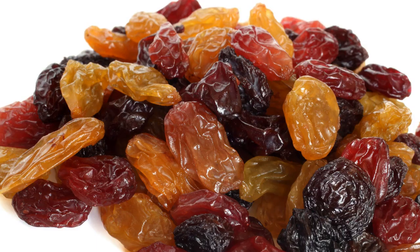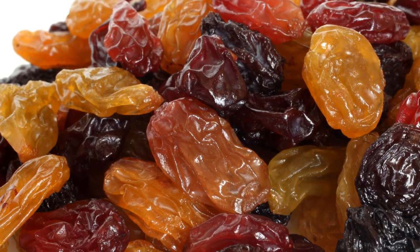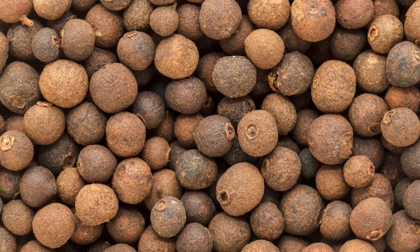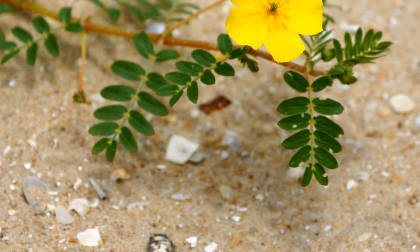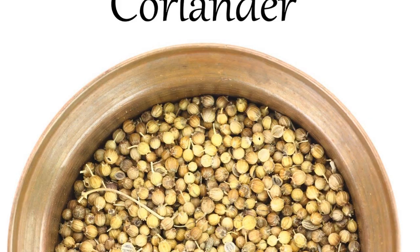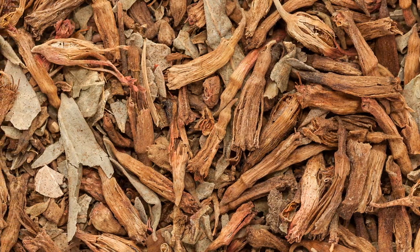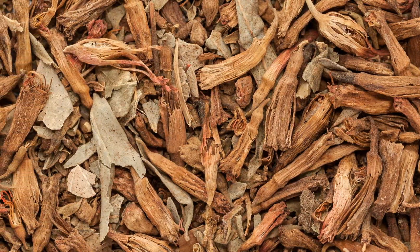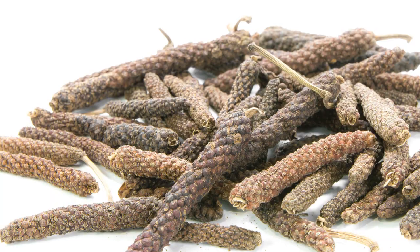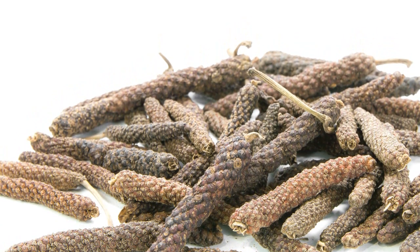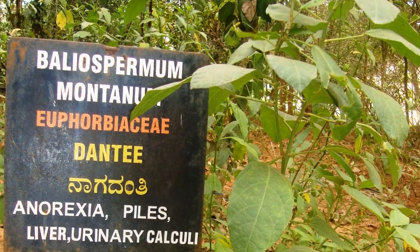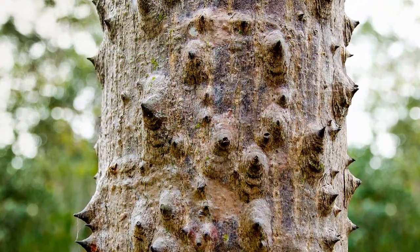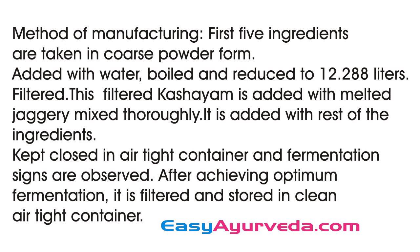Apart from Haritaki, it contains raisins, Vidanga (Embelia ribes), Madhuka (Madhuca indica), jaggery, Gokshura (Tribulus terrestris), Trivrit (Operculina turpethum), Dhanaka (coriander), Dhataki (Woodfordia fruticosa), Indravarani (Citrullus colocynthis), Chavya (Piper retrofractum), Mishreya (Foeniculum vulgare), Shunti or ginger, Bellius perma montanum, and Mocharasa (Salmalia malabarica).